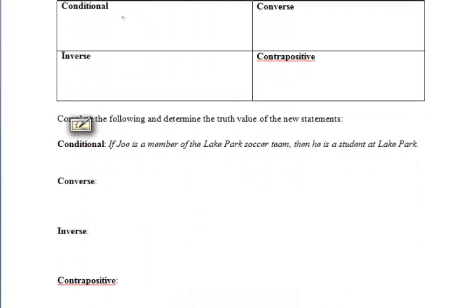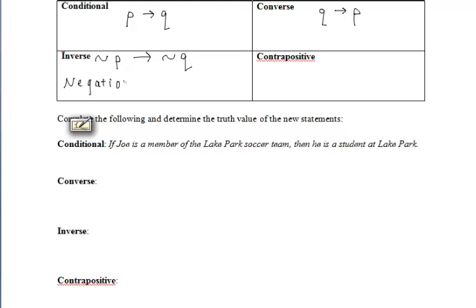The difference between the conditional, converse, inverse, and contrapositive is very important. The conditional is 'if P, then Q,' while the converse is 'if Q, then P.' The inverse is 'if not P, then not Q.' You could think of the inverse as a negation of the conditional statement.